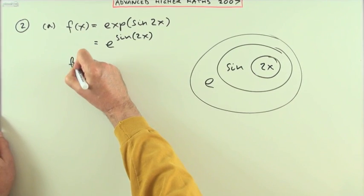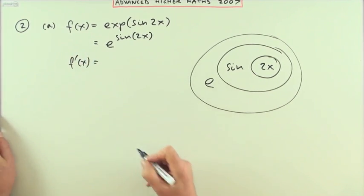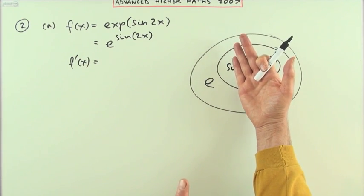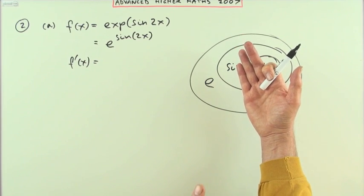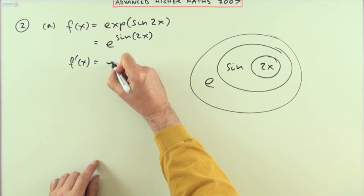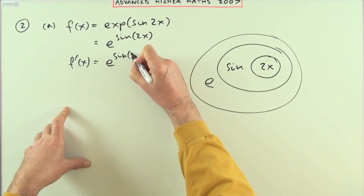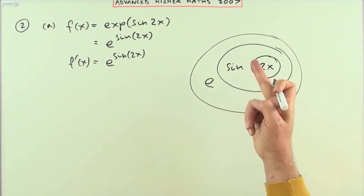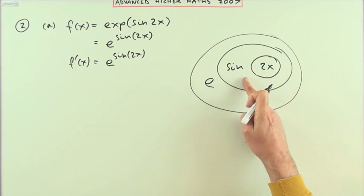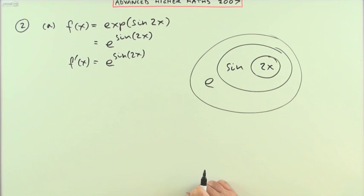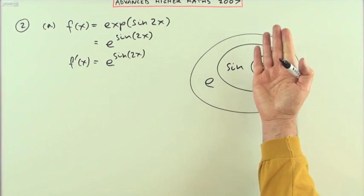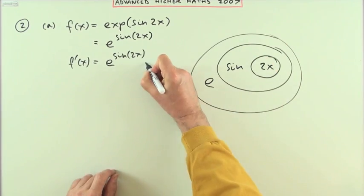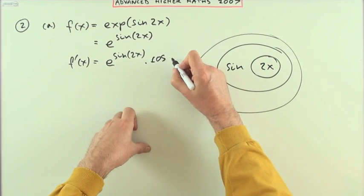So what's the derivative? Well, you start with the outer one—the derivative of e with respect to something will just be e to that something, so it'll just be e to the thing itself, e to the sine of 2x. Now multiply that by the derivative of the function it's acting on, which is a sine. The derivative of the sine of something is the cosine of that thing, so multiplied by the cosine of that thing, which was 2x.